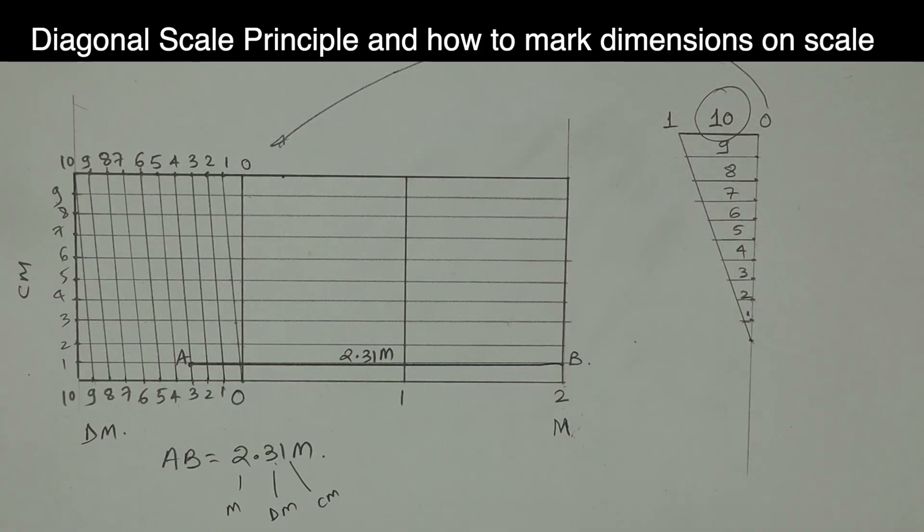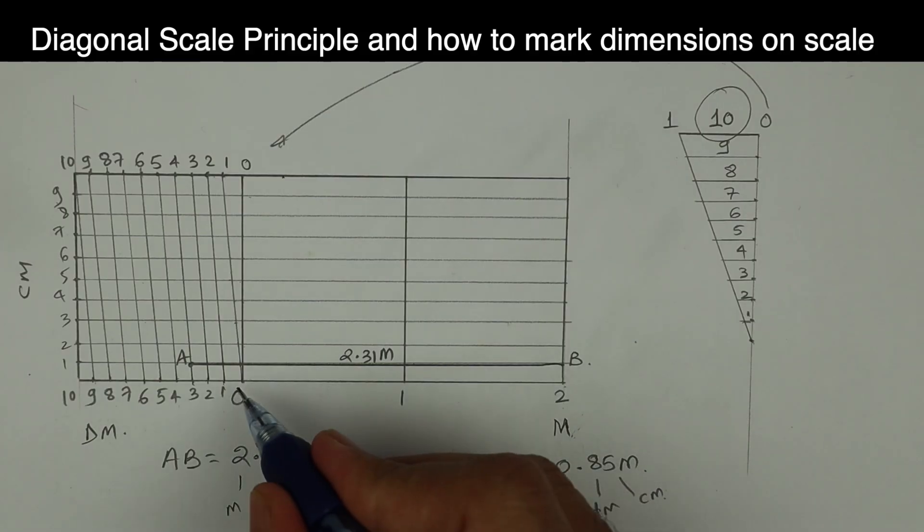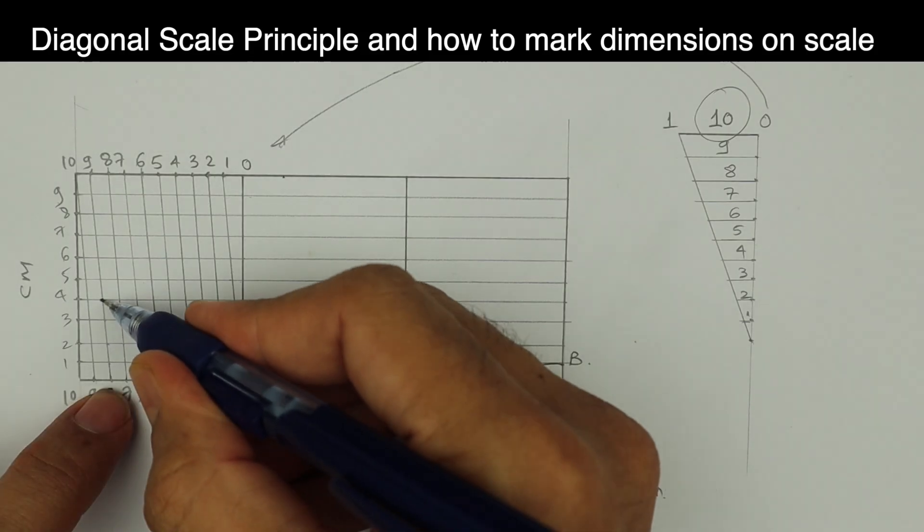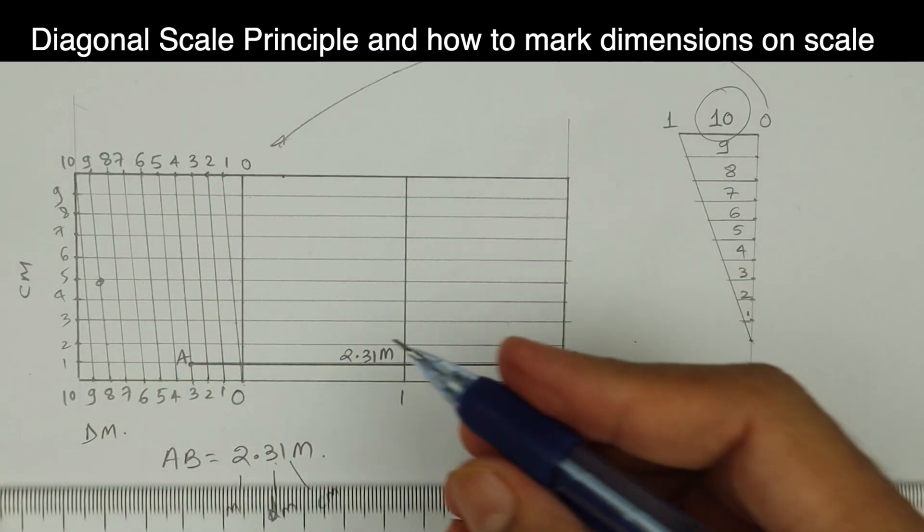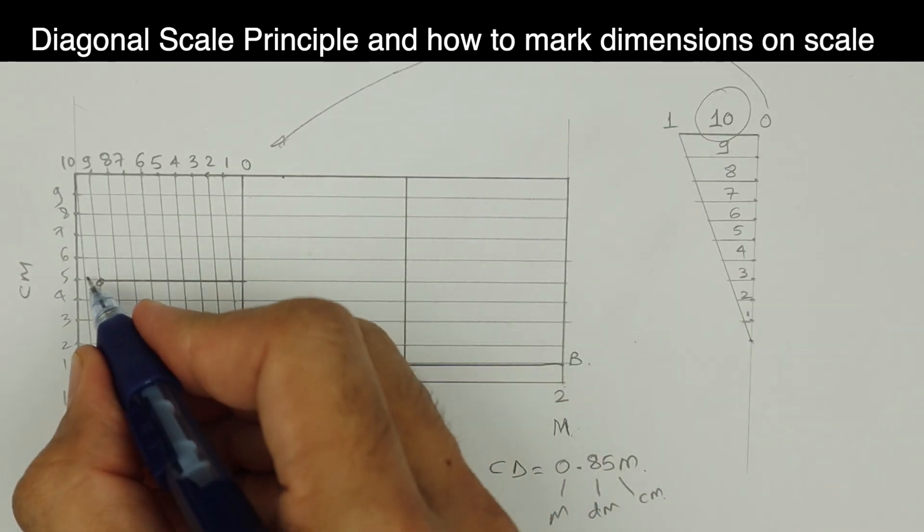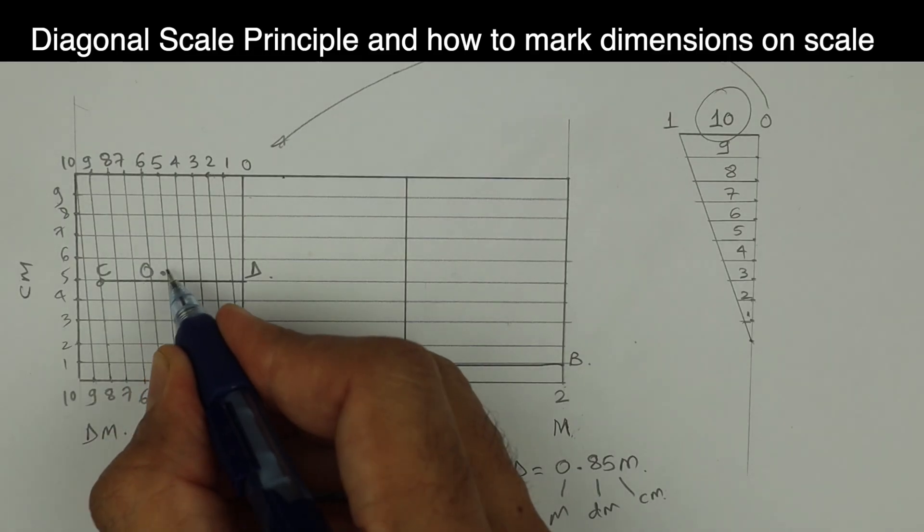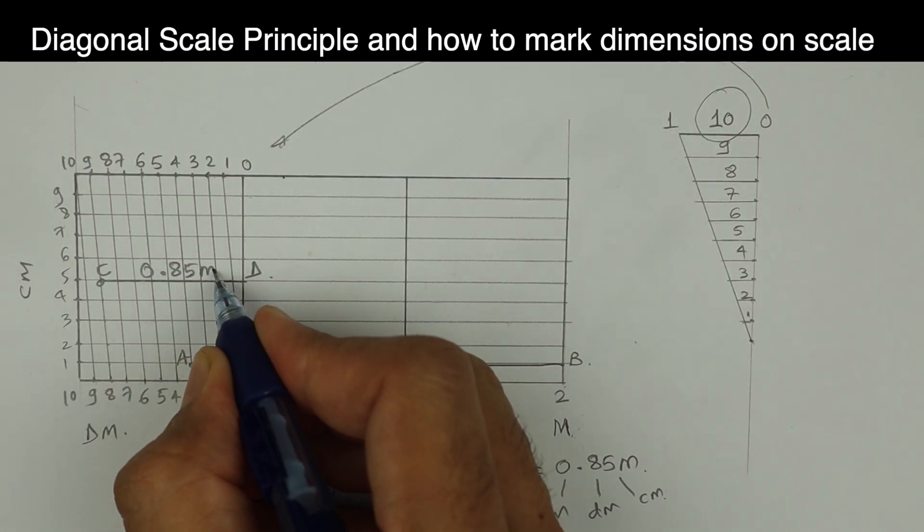See, we have divided this into 10 parts. Now how do you mark CD? 0.85 meter. So 0 meter, 8 decimeter and 5 centimeter. 0, 8, and on that line you'll go 1, 2, 3, 4, 5. See, this is CD. 0, then 8 decimeter and then 5 centimeter.